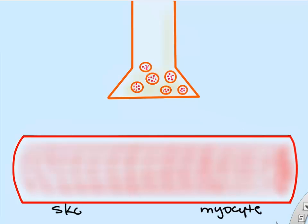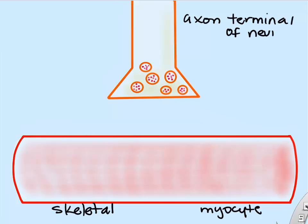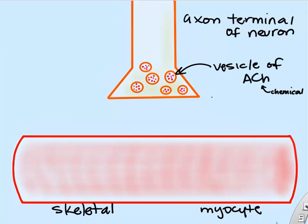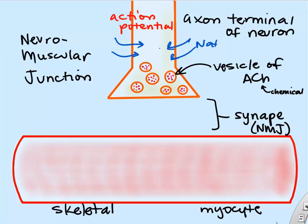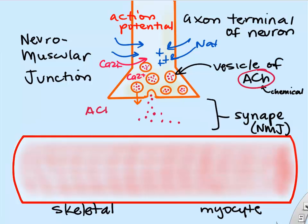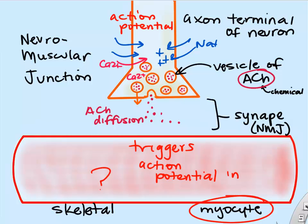Neurons have long axons or extensions. The end of a neuron is called an axon terminal, and in the case of controlling skeletal muscle, those axon terminals store acetylcholine in vesicles. This communication is called a synapse, and since it's between a neuron and a muscle cell, we call it the neuromuscular junction. When the neuron is excited, sodium rushes in, which triggers calcium entry into the axon terminal, causing exocytosis and release of acetylcholine into the synapse.